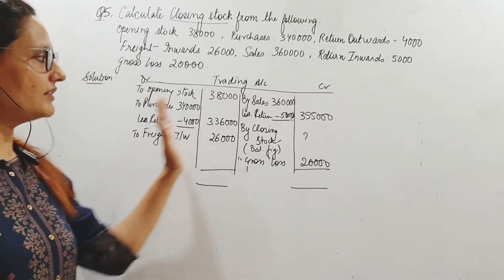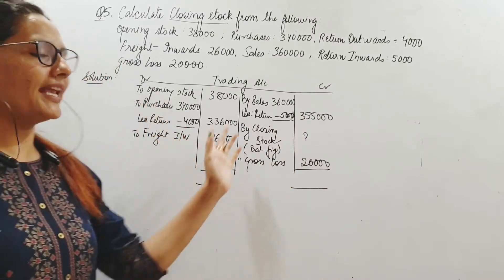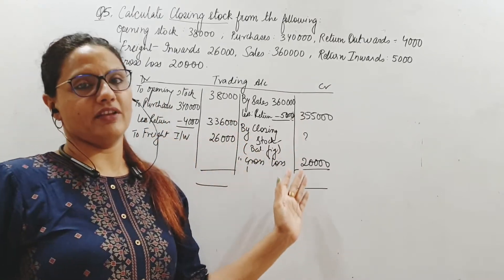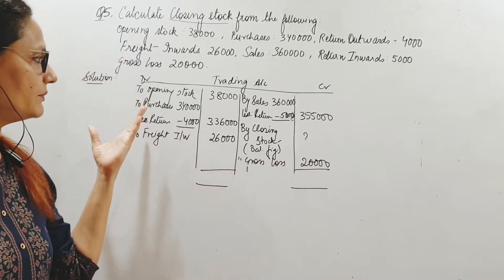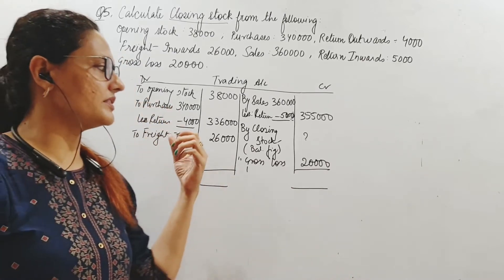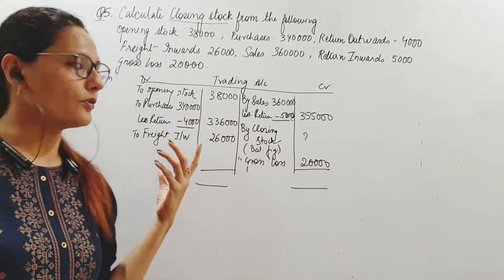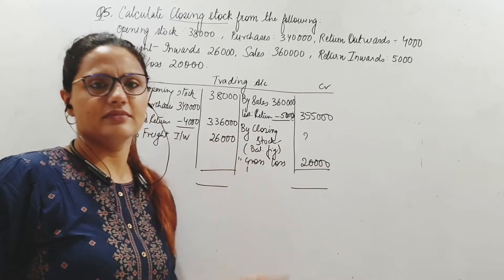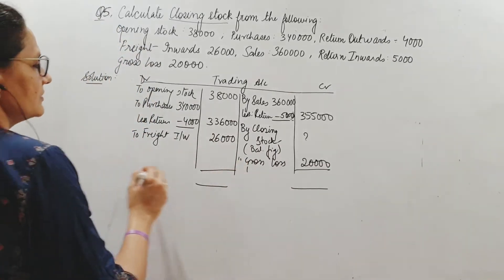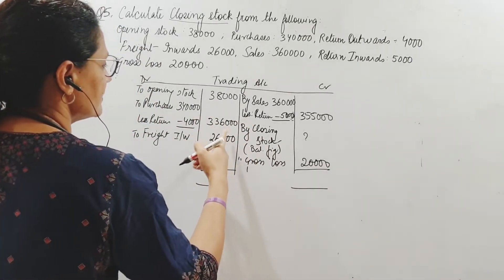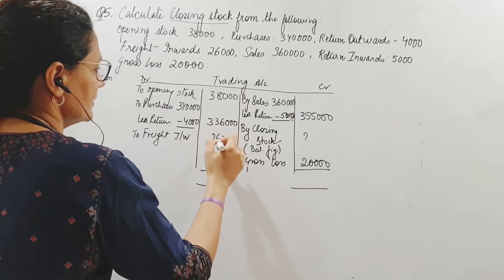If you have the concept of the trading account you can find out any missing figure — opening stock, gross profit, or closing stock. You just have to put the other figures in place. So it is 38,000 plus 3,36,000 plus 26,000 in direct expenses.